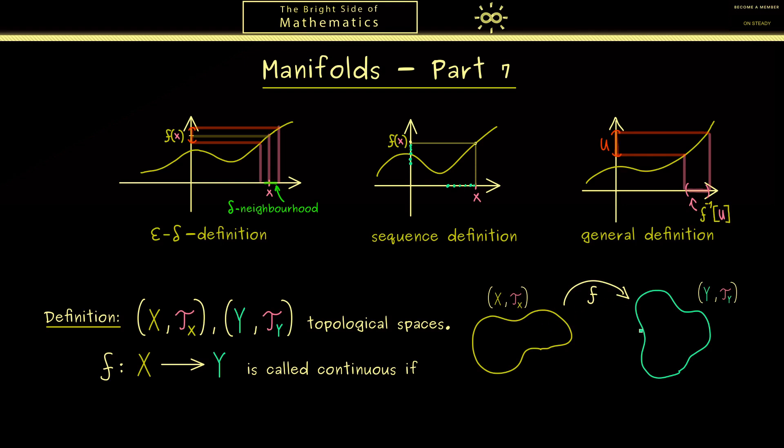However, in general we don't have a metric to measure this closeness, therefore we immediately take the open sets. And therefore we do this as I already told you by taking any open set U on the right hand side, and then we go to the left hand side to the pre-image. And if this pre-image is also an open set, we call the map continuous.